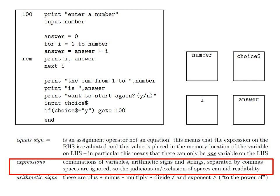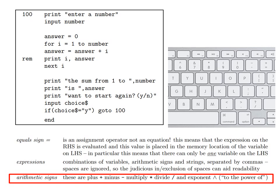Then there are expressions. These are combinations of variables, arithmetic signs and strings separated by commas. Note that spaces are ignored in expressions, so the judicious inclusion or exclusion of spaces can aid readability in your programs. For example, answer plus i is an expression. The arithmetic signs are the usual plus or minus. Multiplication is represented by an asterisk, which is above the key for 8. Divide is represented by an oblique stroke, that is the one below the question mark. While exponent, which means to the power of, is represented by this wedge shape symbol, which is above the key for 6.